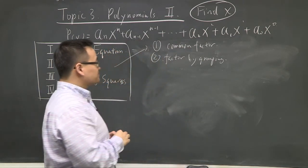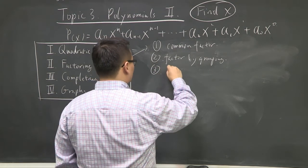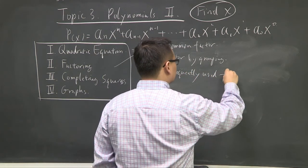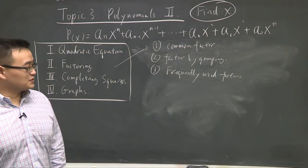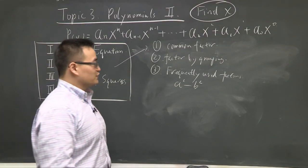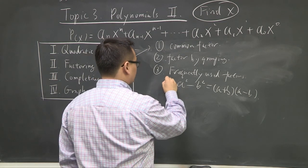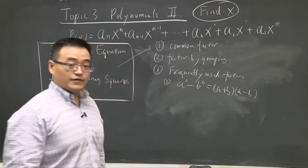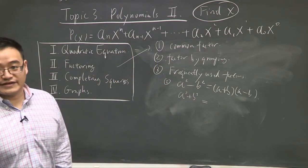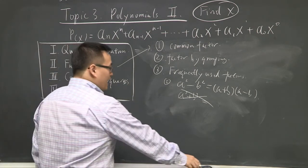In case those don't work, look at some frequently used factoring formulas. The first one: a² − b², the difference of squares, factors as (a + b)(a − b). You're going to see this quite often. What about a² + b²? Trick question — you cannot factor this unless they have a common factor. Leave it alone; that's as low as you can go.